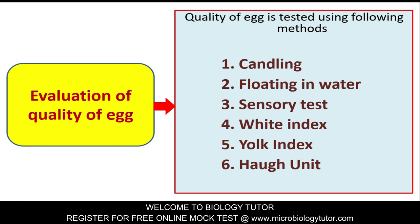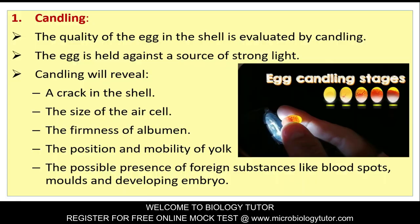Evaluation of quality of egg: Quality of egg is tested using the following methods. First is candling; second is floating in water; third is sensory test; fourth is white index; fifth is yolk index; and the last one is Haugh Unit (HU) index.